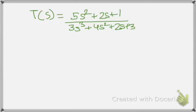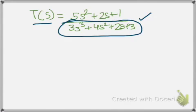Now here I have a transfer function. T(s) equals 5s squared plus 2s plus 1 divided by 3s cubed plus 4s squared plus 2s plus 3. So for this transfer function, the characteristic equation is the denominator. So this 3s cubed plus 4s squared plus 2s plus 3 is my characteristic equation.